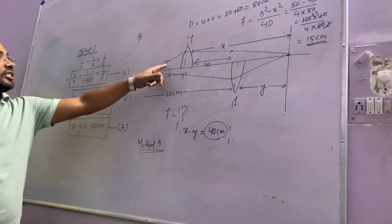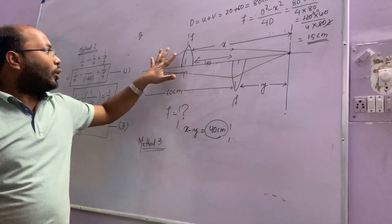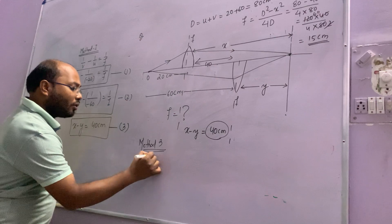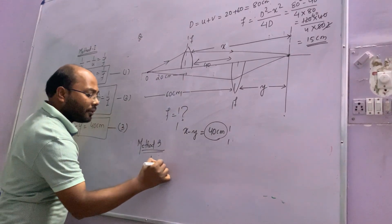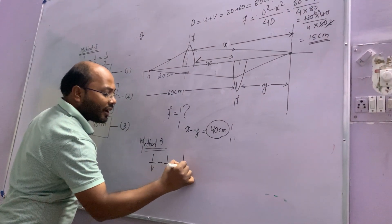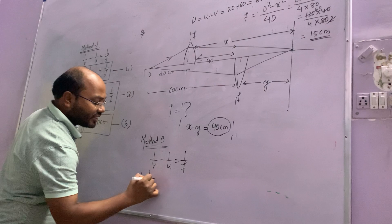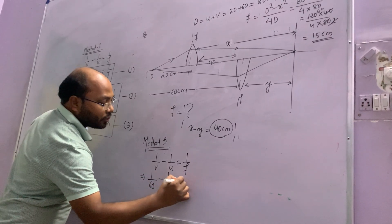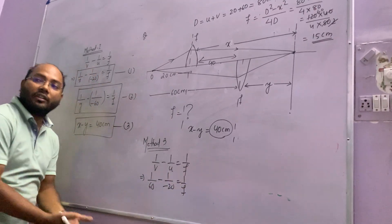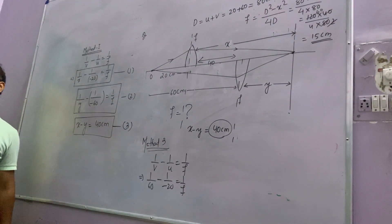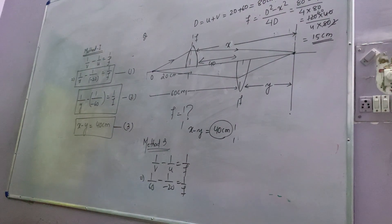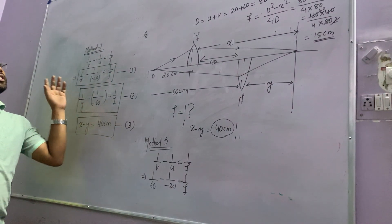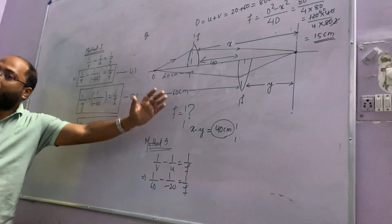Method 3 — direct application. If U = 20 cm and V = 60 cm, directly apply 1/V minus 1/U = 1/F: 1/60 minus 1/(-20) = 1/F, giving F = 15 cm. Once you understand the concepts, you can calculate using any method.